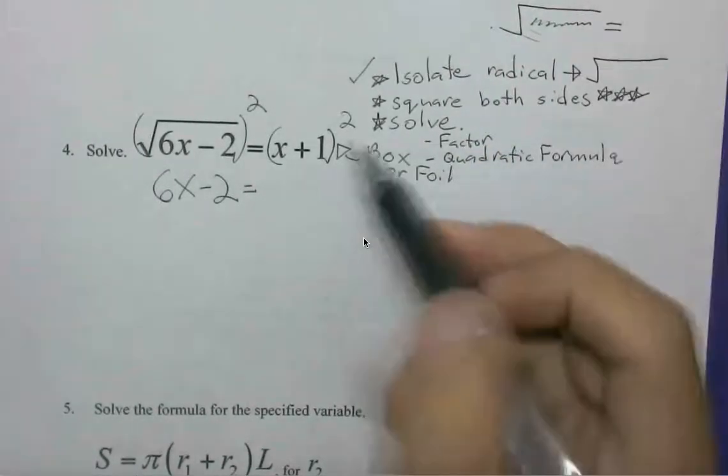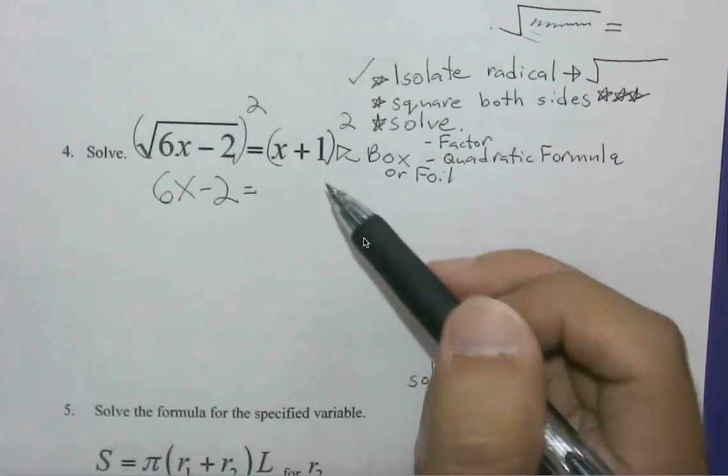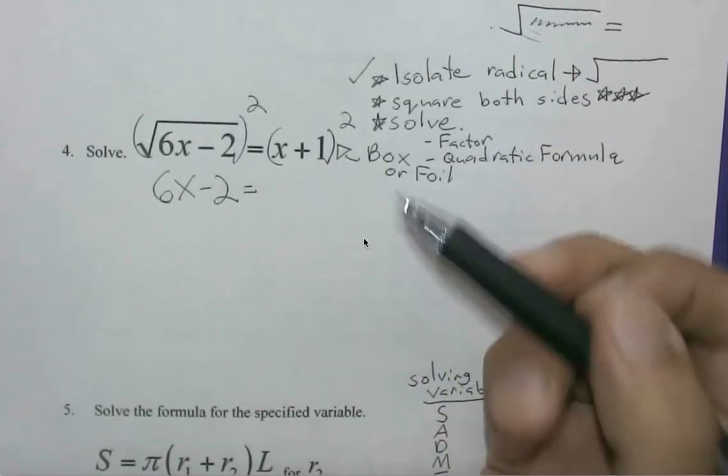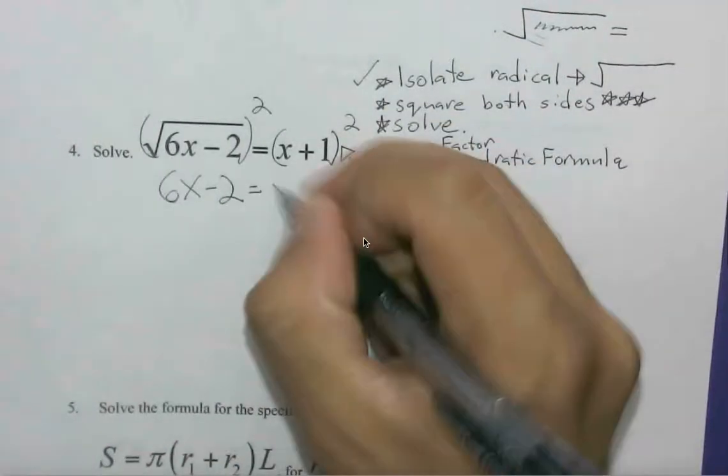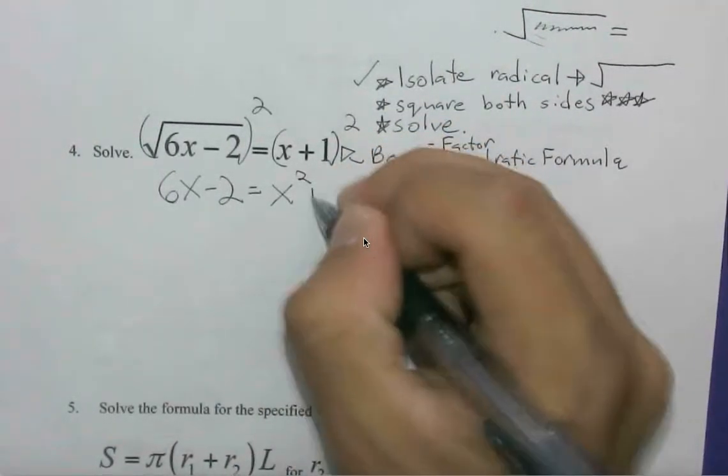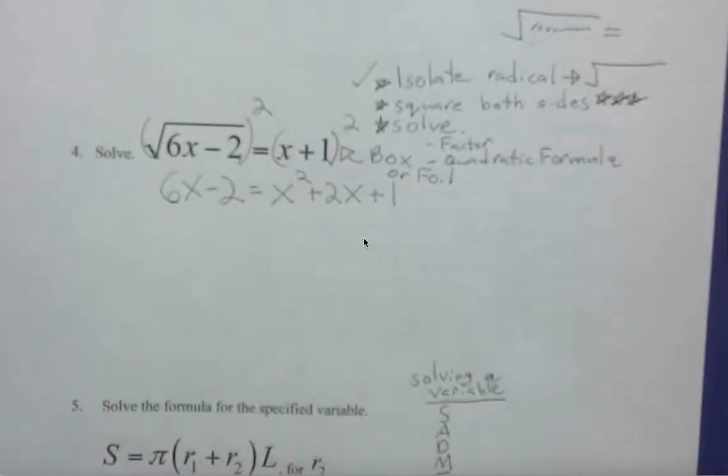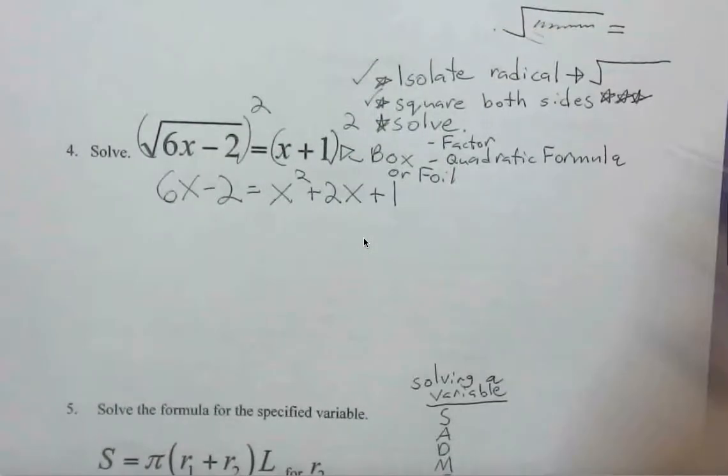So hopefully you're thinking of using box method or FOIL to take this further. If you need a refresher on this, please check the previous videos or examples or practice that we've been doing in class previously. This should then get us x squared plus 2x plus 1.